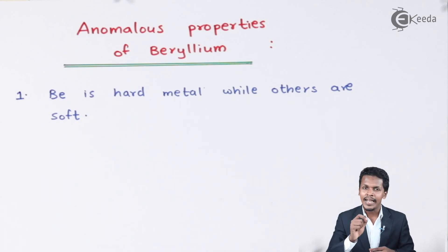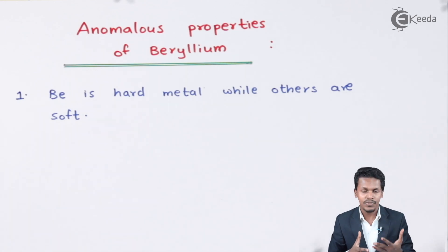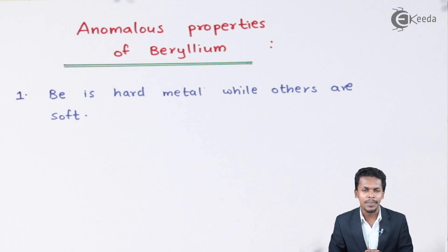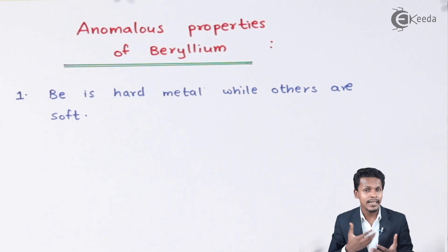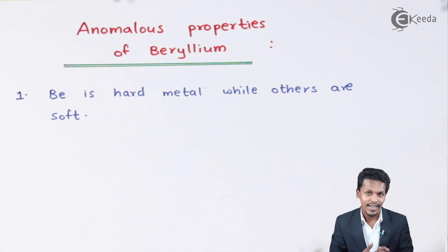As we know, s-block elements are basically very soft elements. If you observe potassium or sodium, these are soft metals, and even calcium and magnesium are soft metals. But talking about beryllium, in physical appearance also it is very much hard compared to the other elements which are basically soft.